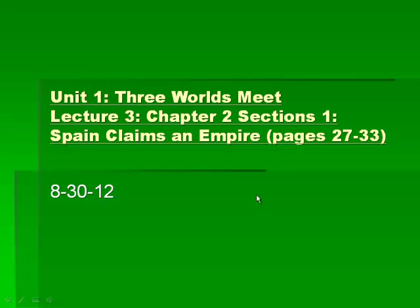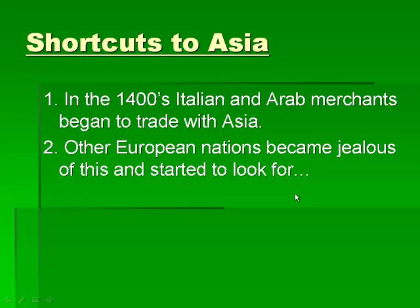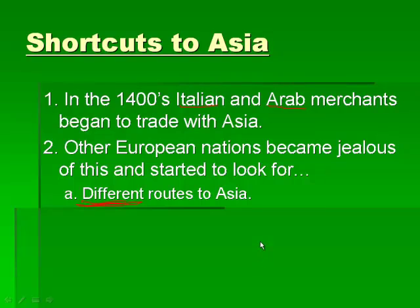In the 1400s, Italian and Arab merchants began to trade with Asia, and they are trading with Asia and they make a lot of money. So if they are making a lot of money trading with Asia, other European nations are going to become jealous of the money that they are making. They are going to start looking to trade with Asia, which means they are going to start looking for different routes. The routes that the Italian and Arab merchants are using, they basically have those things sealed up and they are not letting any other nations use them, so other nations need to find different routes.